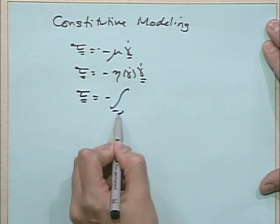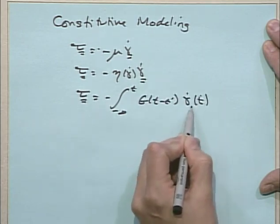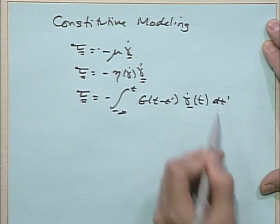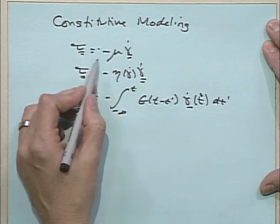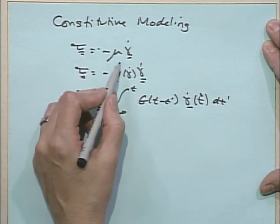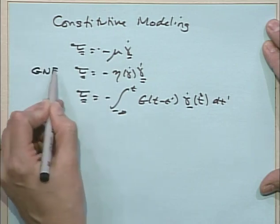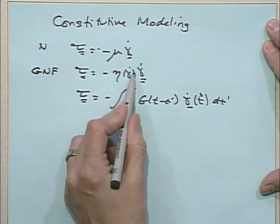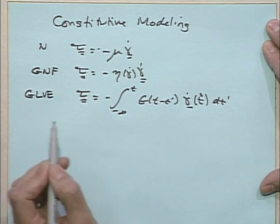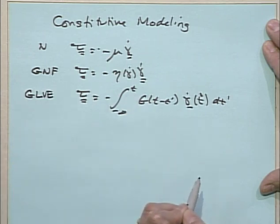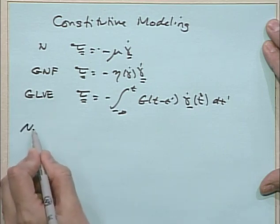This model is the ultimate we've got so far. The Newtonian model only handles constant viscosity. The generalized Newtonian fluid model handles shear thinning but doesn't handle any time dependence. The generalized linear viscoelastic model handles time dependence but doesn't handle shear thinning. So we're going to go next on to nonlinear models.